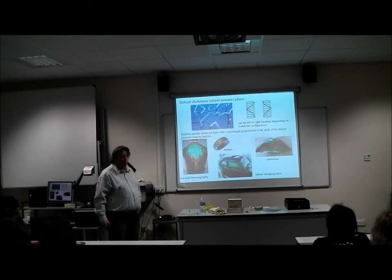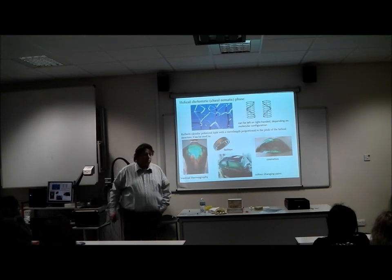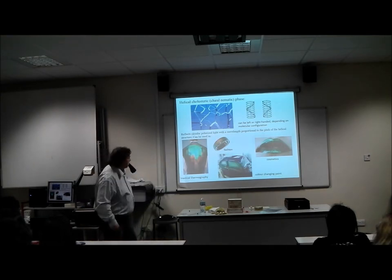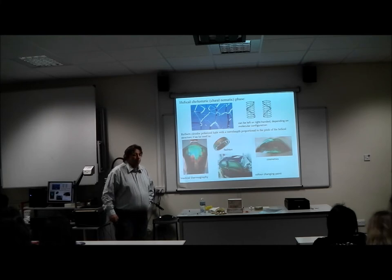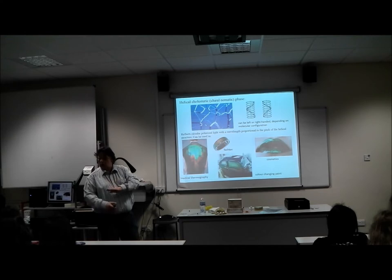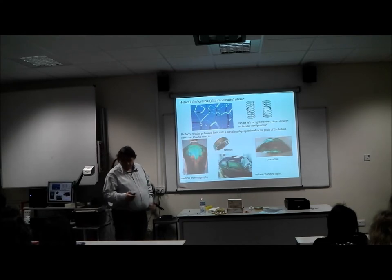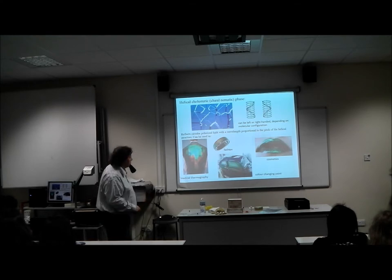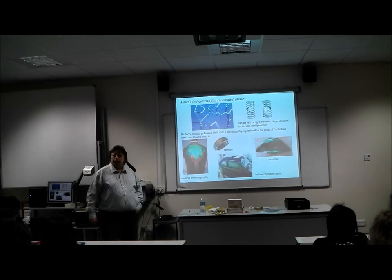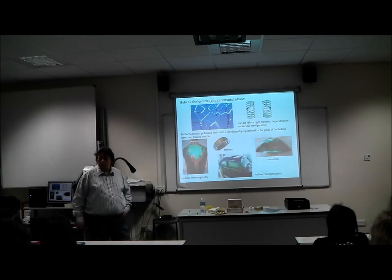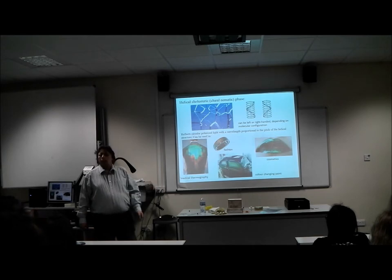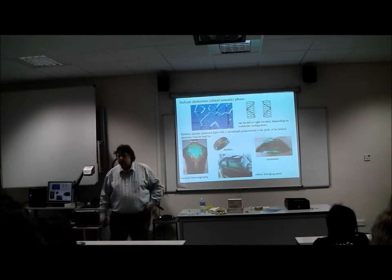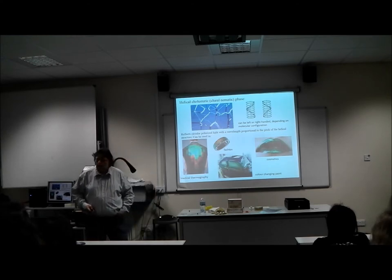That has uses in a number of different applications — medical thermography, for example. They smear your back with a cholesteric liquid crystal, and wherever you have an inflammation or a tumor, it's warmer than in other places. The reflected color depends on the pitch of the spiral, and that changes with temperature. You can also use it for pretty cool colors — you can make paint out of it, and the car will have a different color when it comes towards you, then it's beside you, then it changes color again. There is at least one car like that running around here in Manchester.